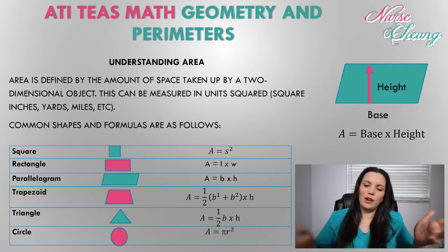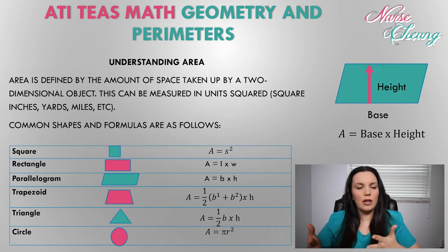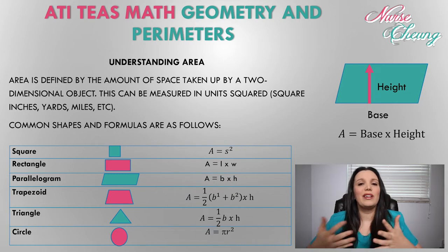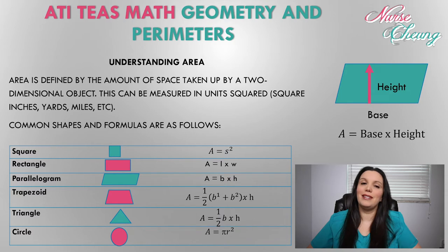So the parallelogram is another one of those funny shapes you don't see a whole lot, but the ATIT's wants you to figure out how to do the equation. So to find the area of a parallelogram, we're going to take the base because both the bases, whether it's the top or the bottom, are equal to the same, and we're going to times that by the height. So the area of a parallelogram is base times height.